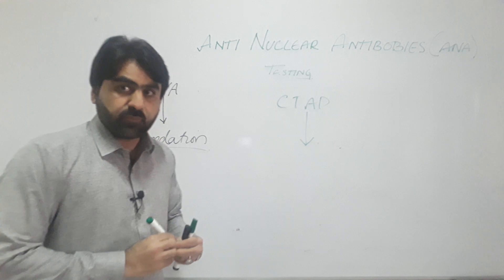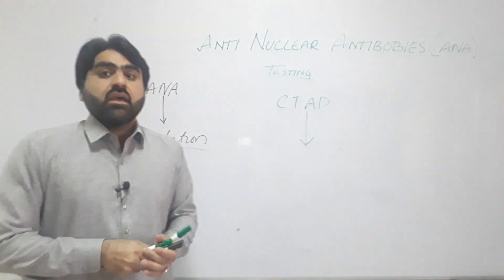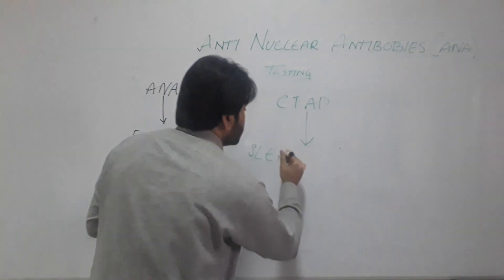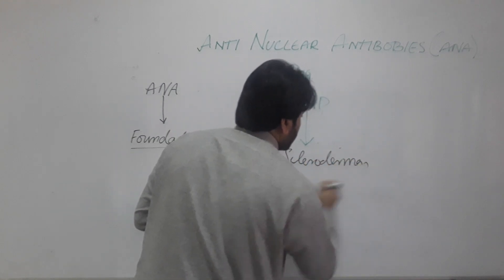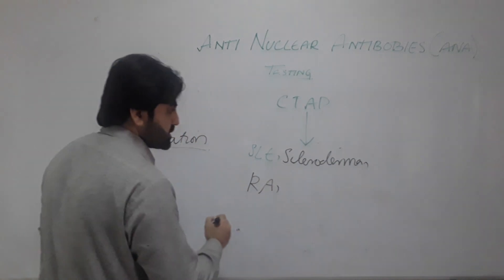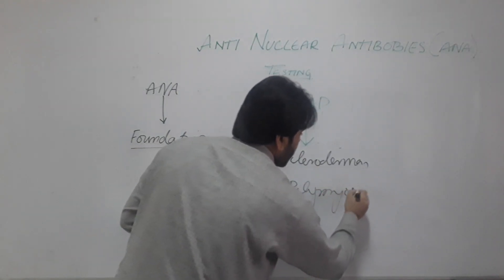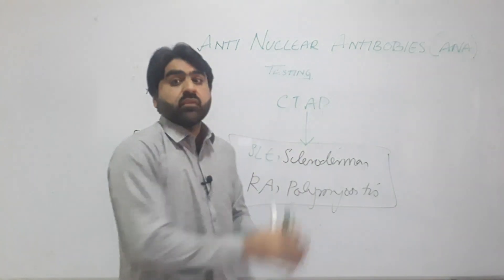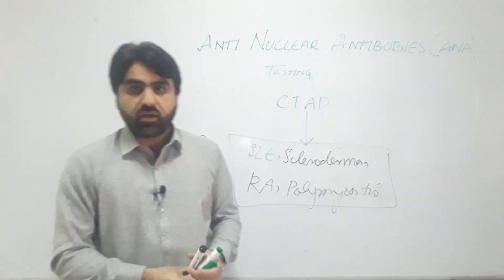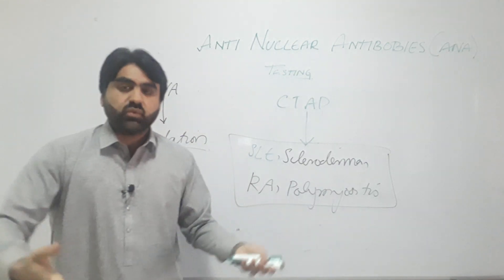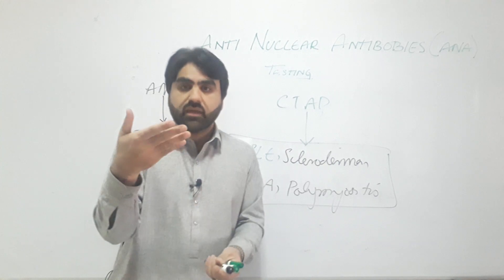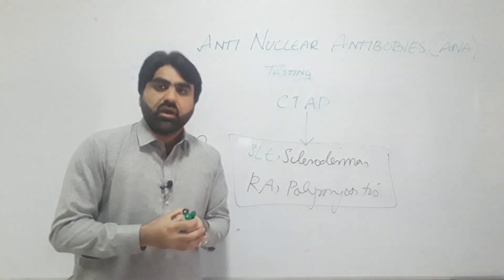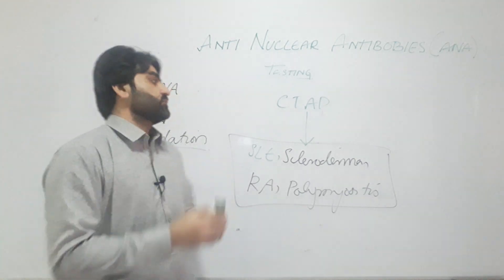Connective tissue autoimmune diseases are a group of autoimmune diseases which include systemic lupus erythematosus, scleroderma, rheumatoid arthritis, polymyositis, and others. These are diseases which primarily affect bones, joints, or other organs usually supported by connective tissue, such as the liver, lungs, heart, brain, or any other organ of the body strongly supported by connective tissue.